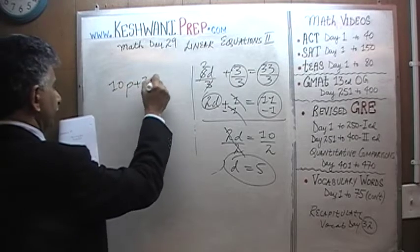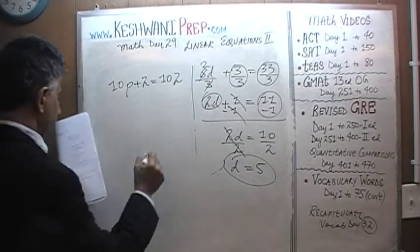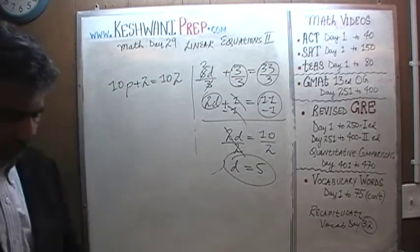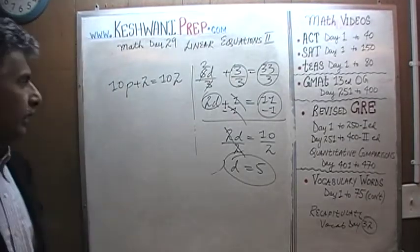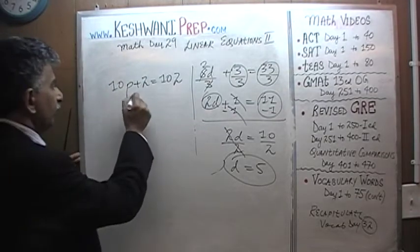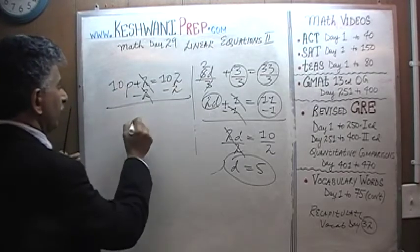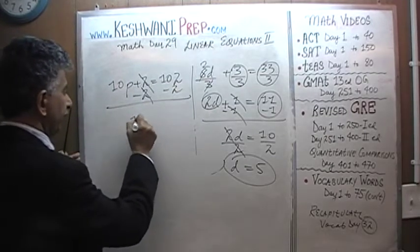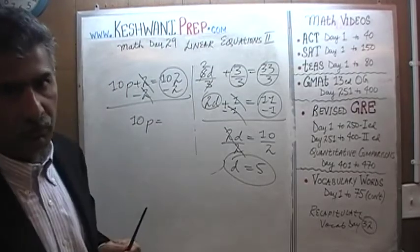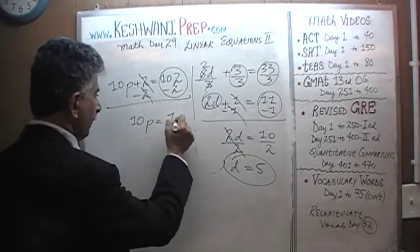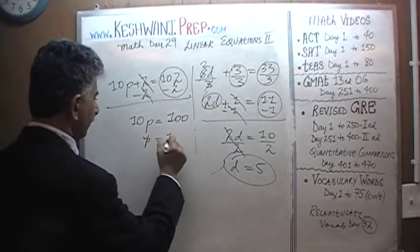10p plus 2 equals 102. Let's subtract 2 from both sides. 2 drops out and we find that 10p equals 102 minus 2 which is 100, and therefore p equals 10.